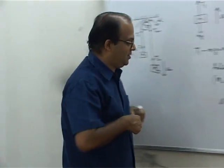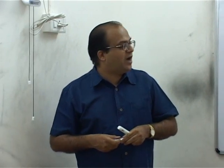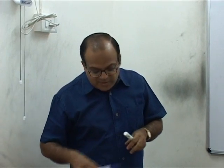If the pulley were massless, this term would not have been there. Now the pulley is having mass, so I by R square has come in the denominator.